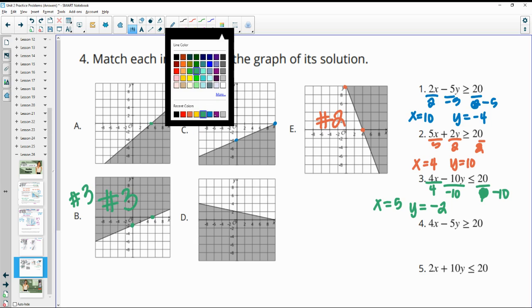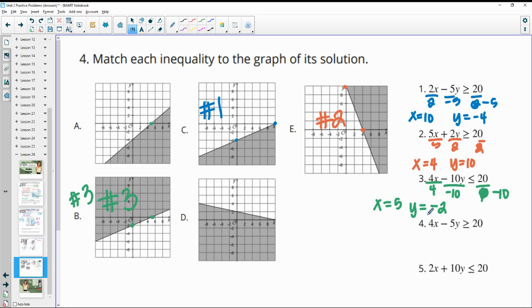And then we can look at number 4. So divide by 4 to get our x intercept of 5. And then divide by negative 5 to get our y intercept of negative 4. So x equals 5 as an intercept here, y equals negative 4 as an intercept here. So this one goes with number 4.